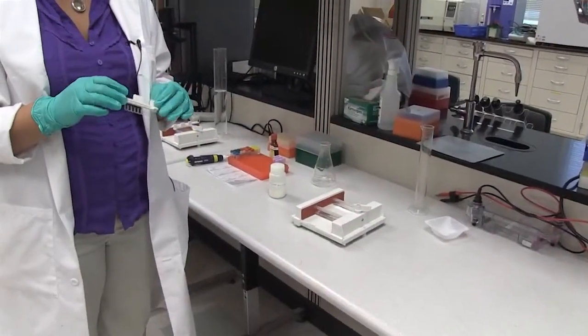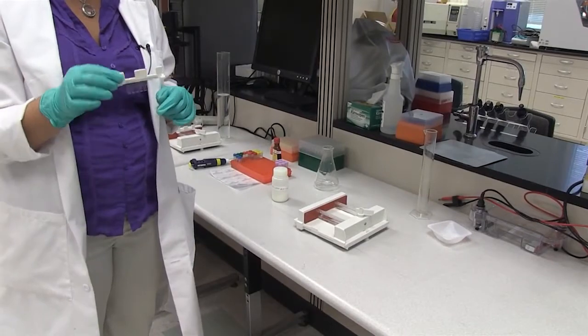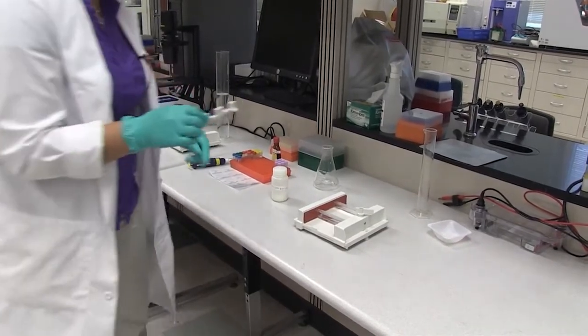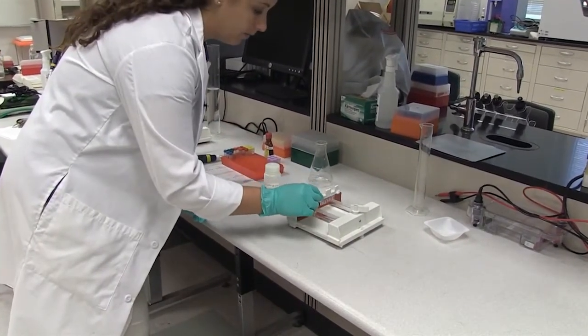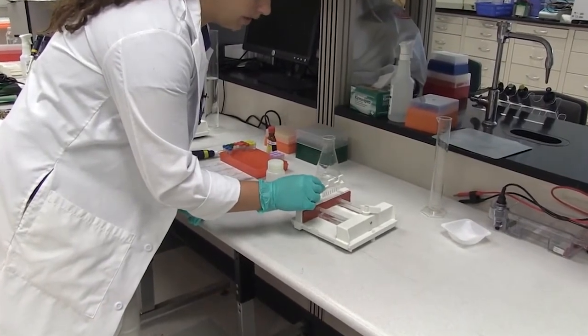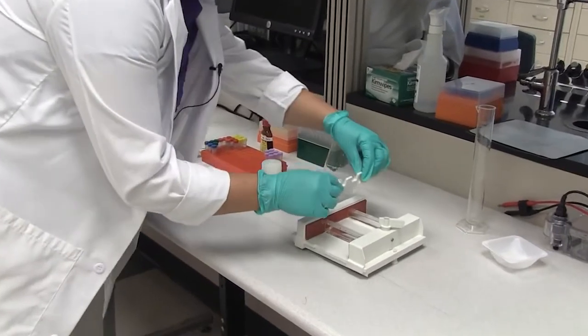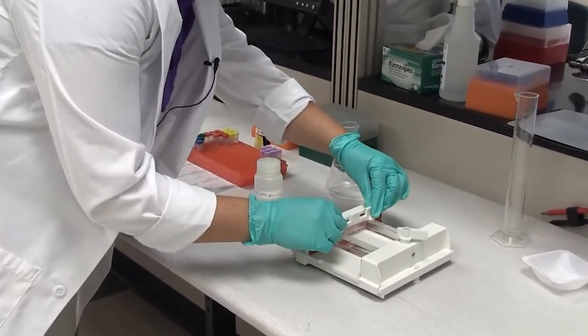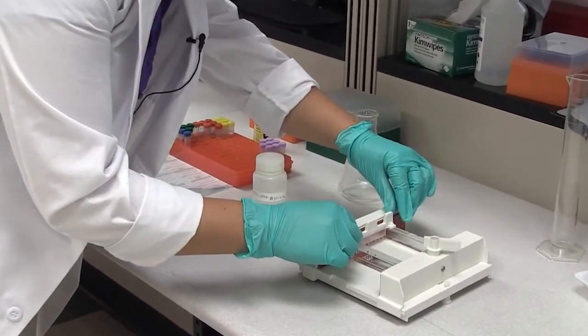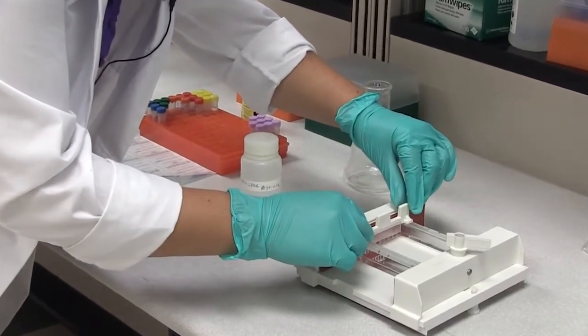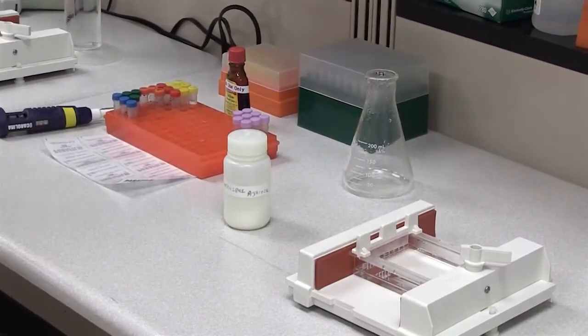We're going to take our comb, we're using an 8-well comb, and we're going to place it in the agarose gel before it starts to dry. We don't want it to be pushed all the way up against the end of the rubber dam. There's actually a little holder that fits in to secure your wells in place.